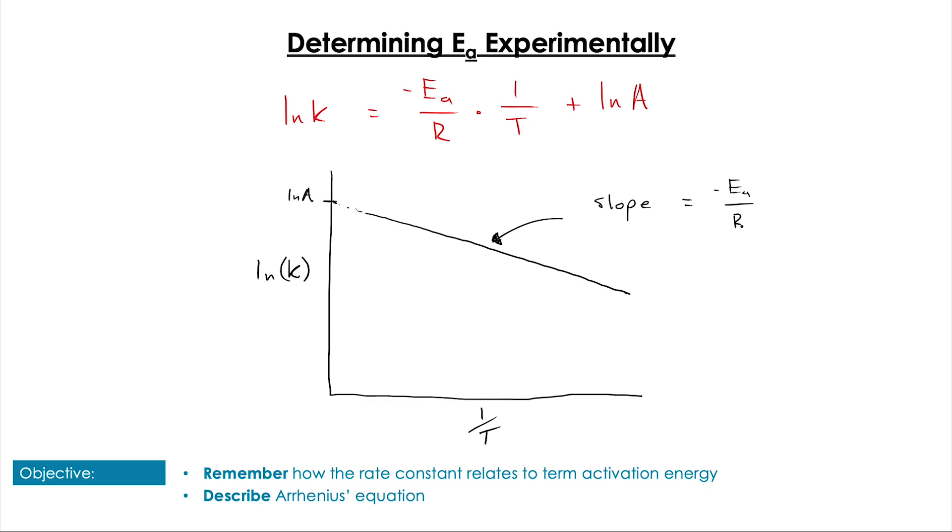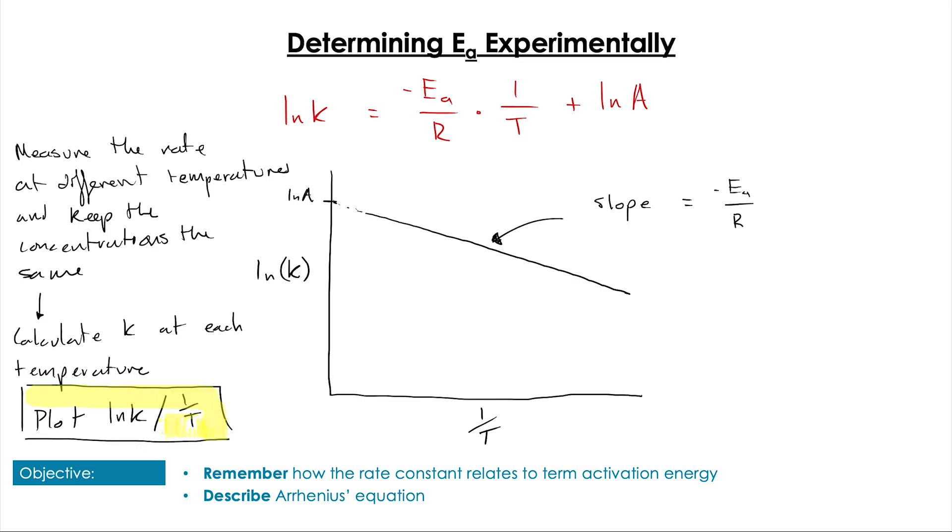Now the way we go about actually doing this is by measuring the rate of reaction at different temperatures where we keep all the concentrations the same, and then at those temperatures calculating the value of k, the rate constant. Then once we have the value of k at those different temperatures, we then take ln of those values of k and 1 over T, the temperature. And then once we've got that, we can then make this the Arrhenius plot: ln k over 1 over T.